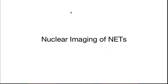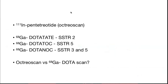Coming to nuclear imaging for neuroendocrine tumors — previously, before the advent of Gallium-68 DOTA scans, we had Octreo scan which used Indium-111 pentetreotide. After this, we have Gallium DOTATATE, DOTATOC, and DOTANOC — all are different based on their binding to specific SSTR receptors. DOTATATE specifically binds to SSTR type 2, TOC for 5, and NOC for mostly 3 and 5.